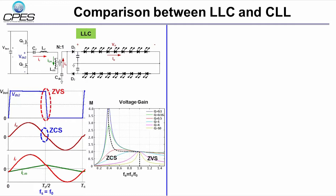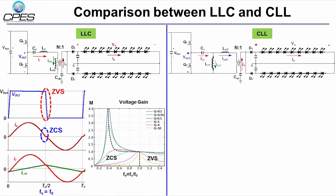For CLL, there are also three resonant elements: CR, LR1, and LR2. Since the magnetizing inductance of the transformer could be as large as possible, its impact is ignored.